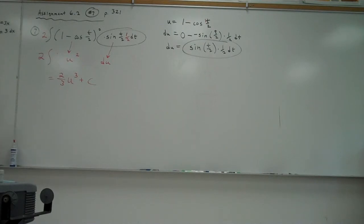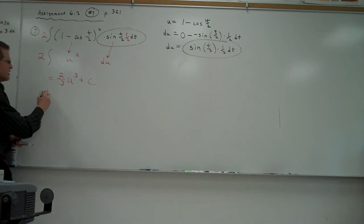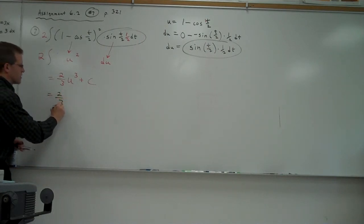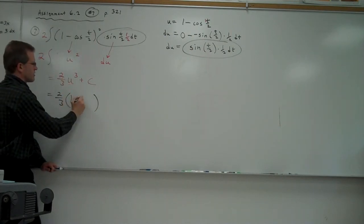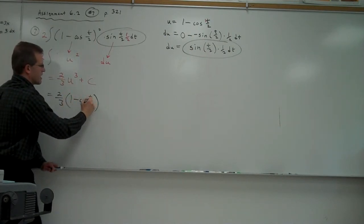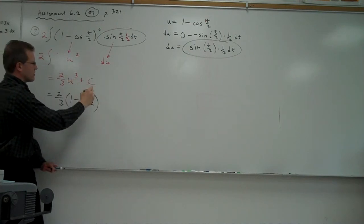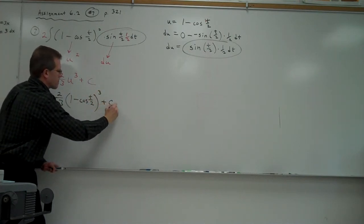Now all we have to do is substitute back in our t expression in place of u. So my final answer is going to be this: 2 thirds, instead of u, we're going to substitute in 1 minus the cosine of t/2, and that's to the third power, plus c.